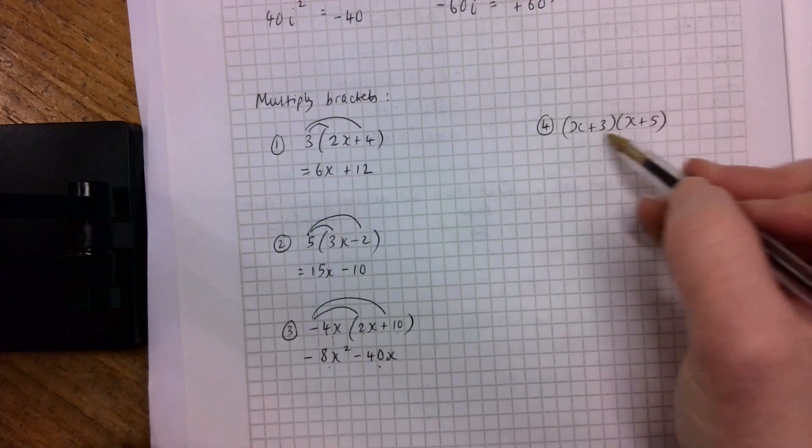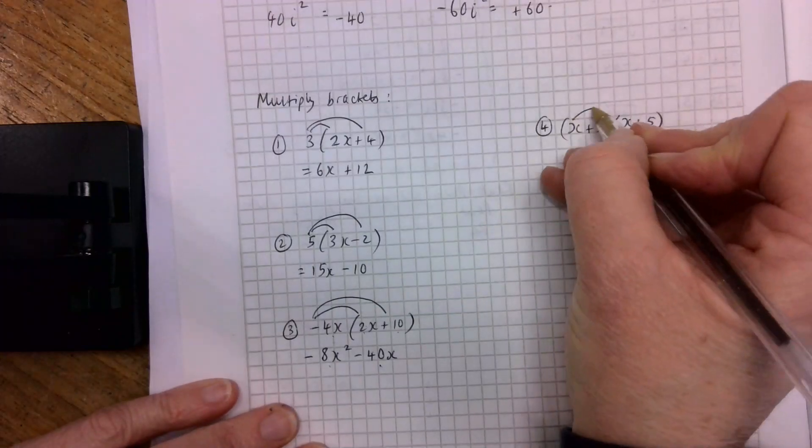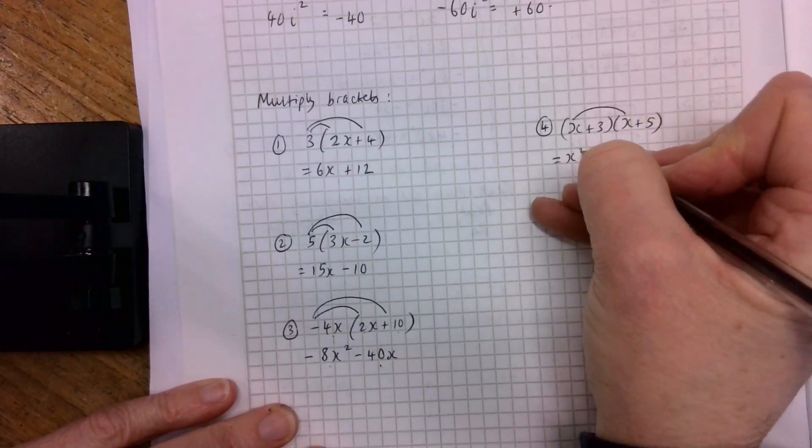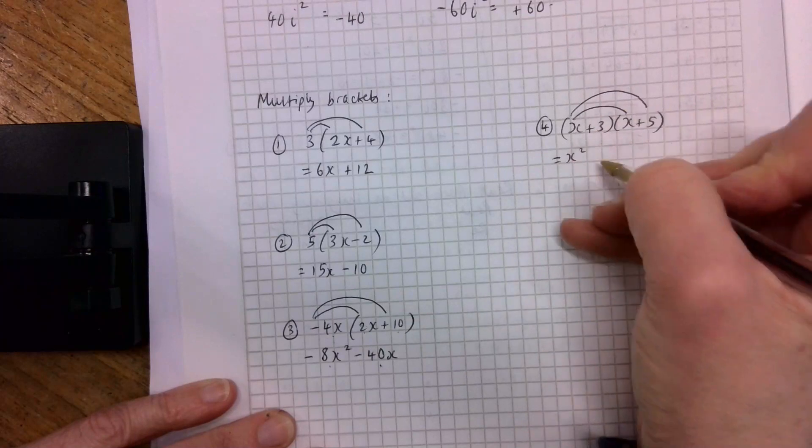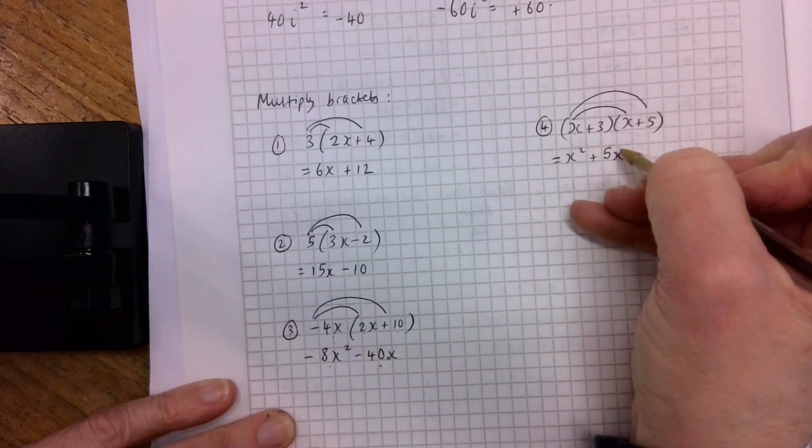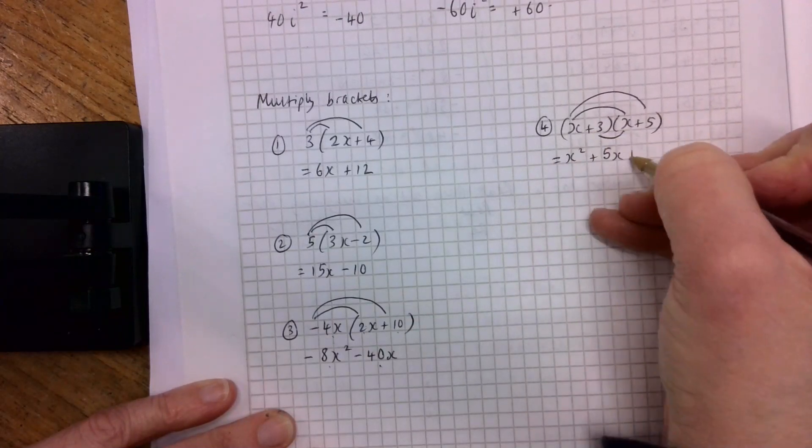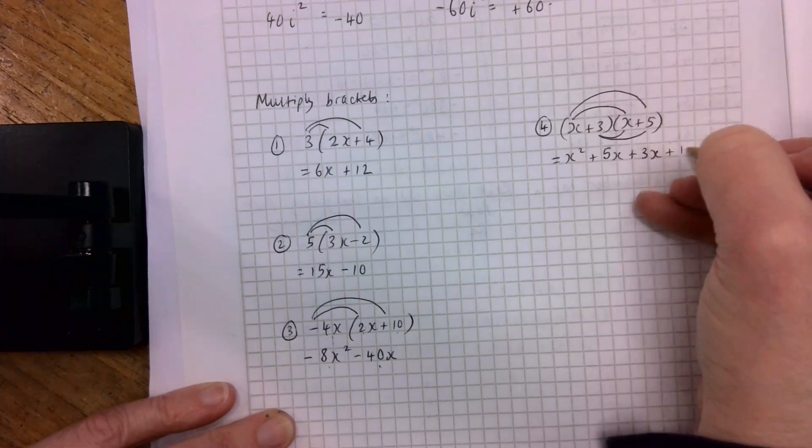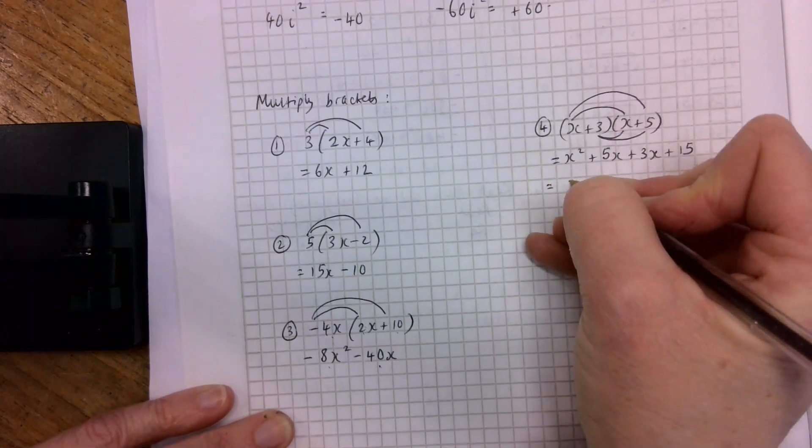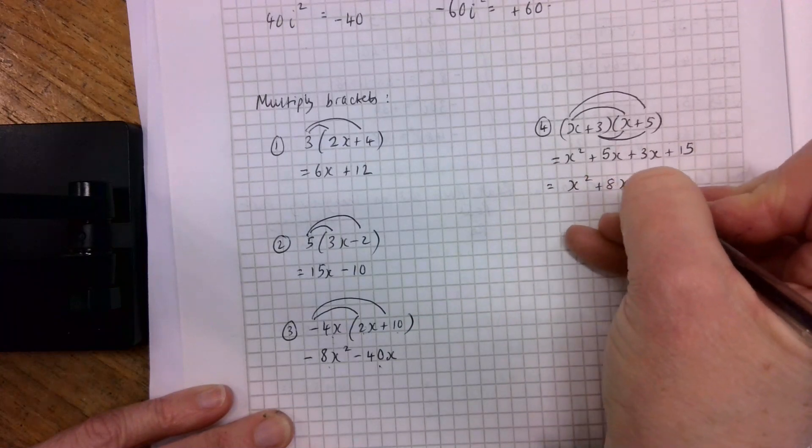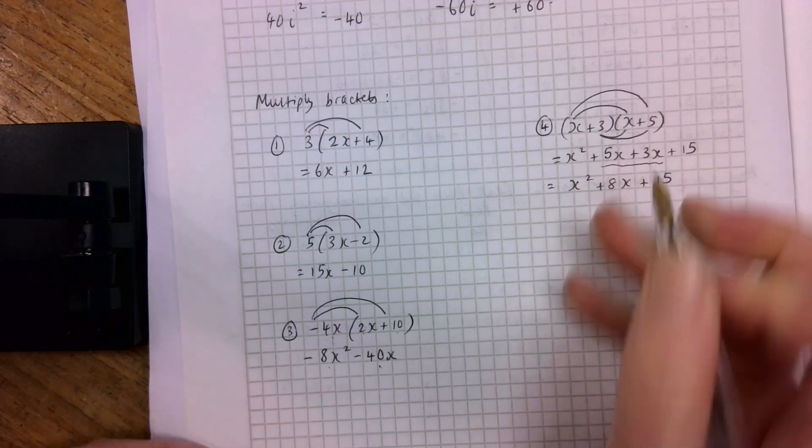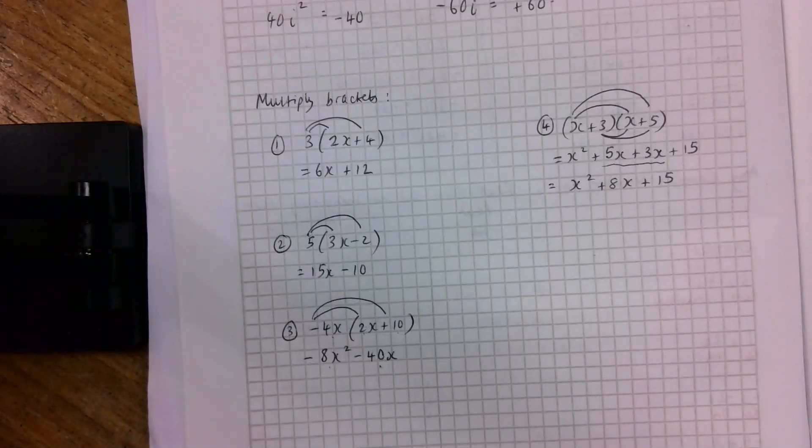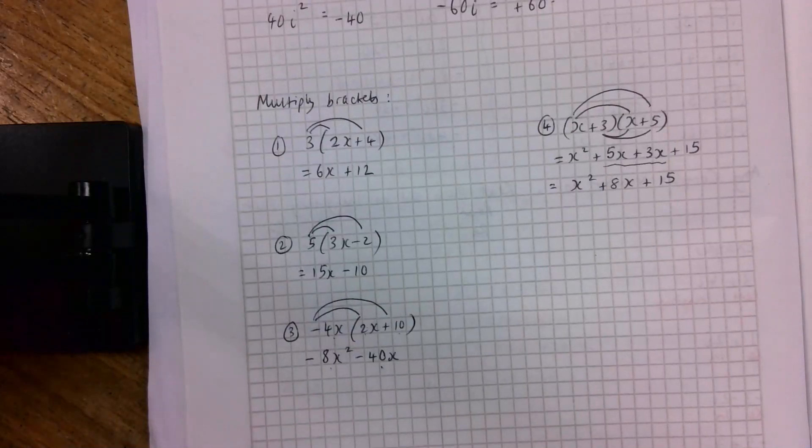So let's look at this one then. We've got x by x will give me x squared, and x by 5 will give me 5x. 3 by x will give me 3x, and 3 by 5 will give me 15. And then we have x squared plus 8x plus 15, because these guys can go together. So hopefully coming back to you is how we multiply out brackets.